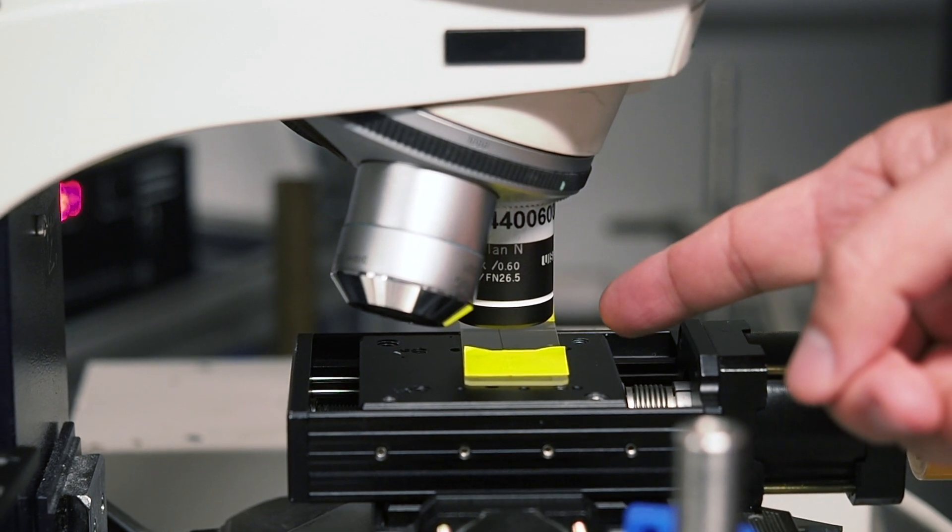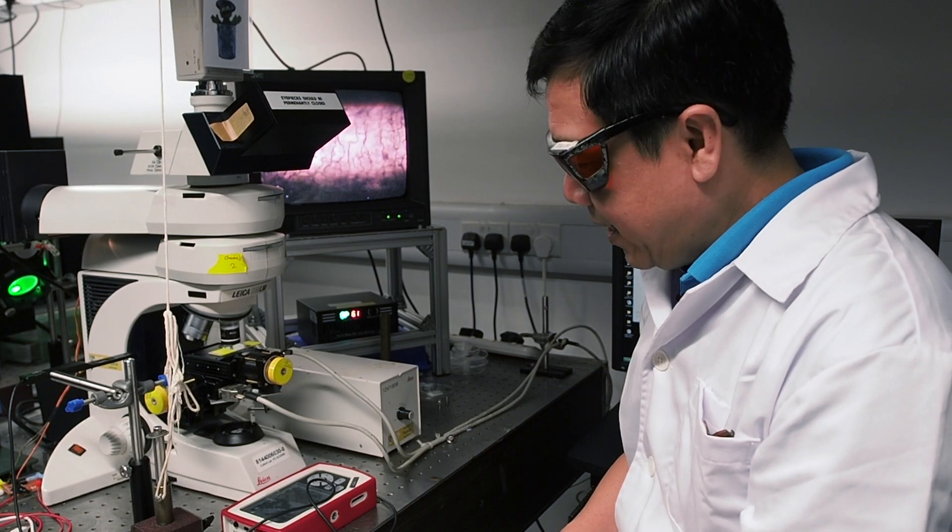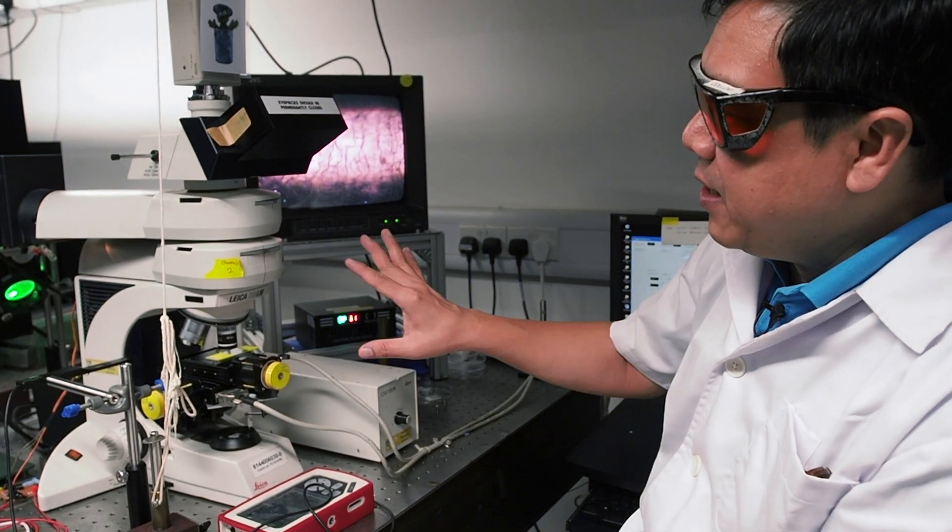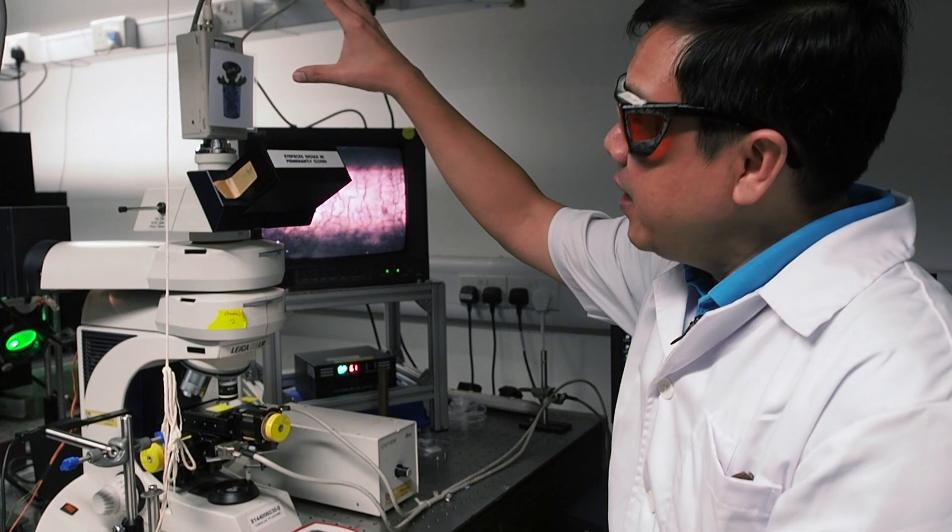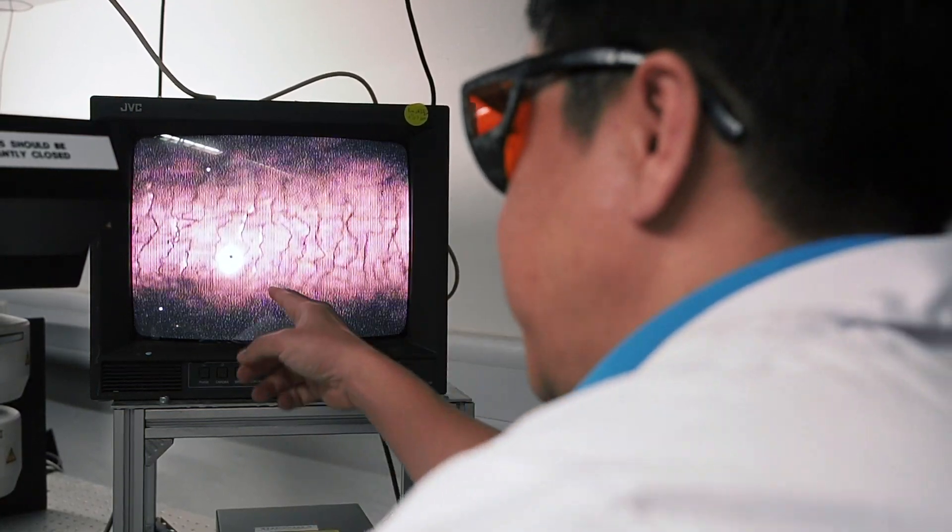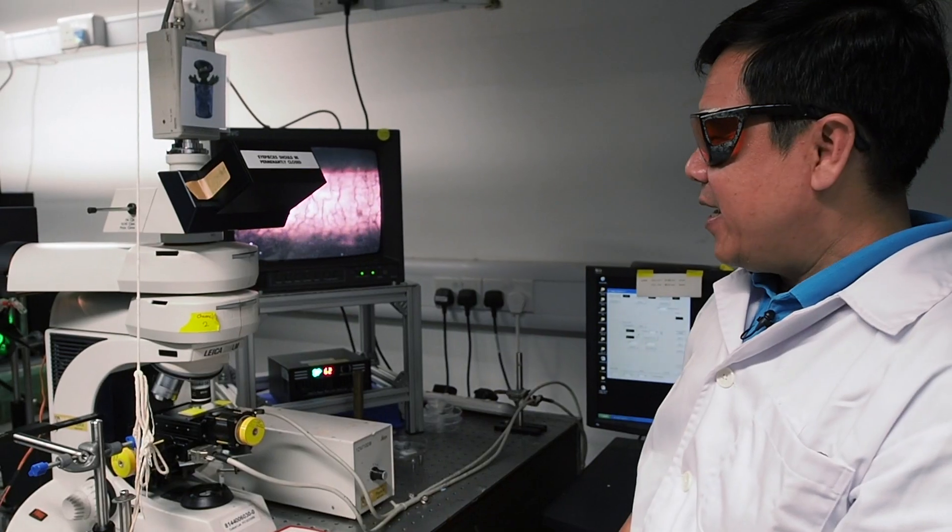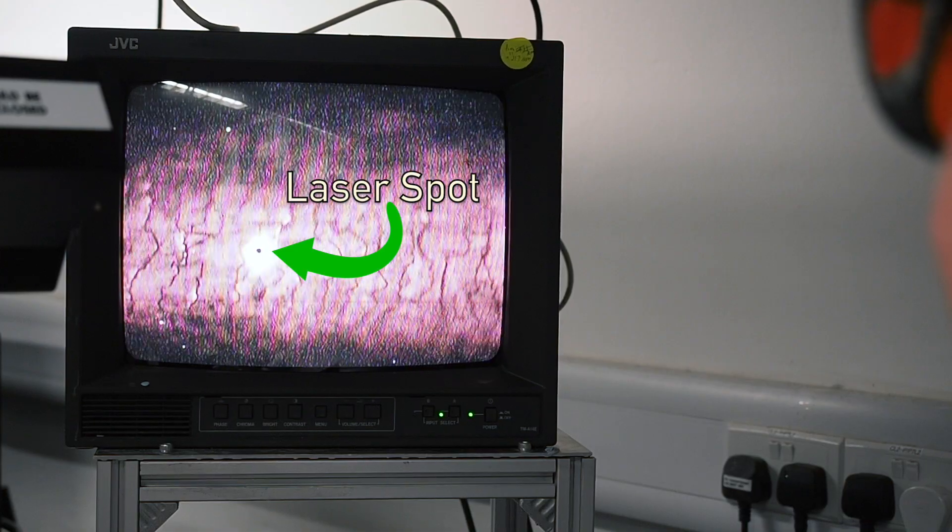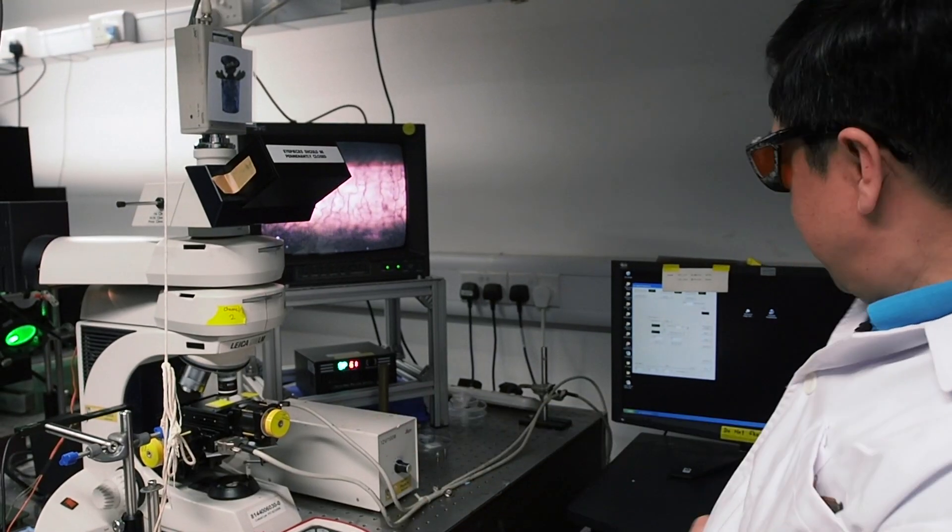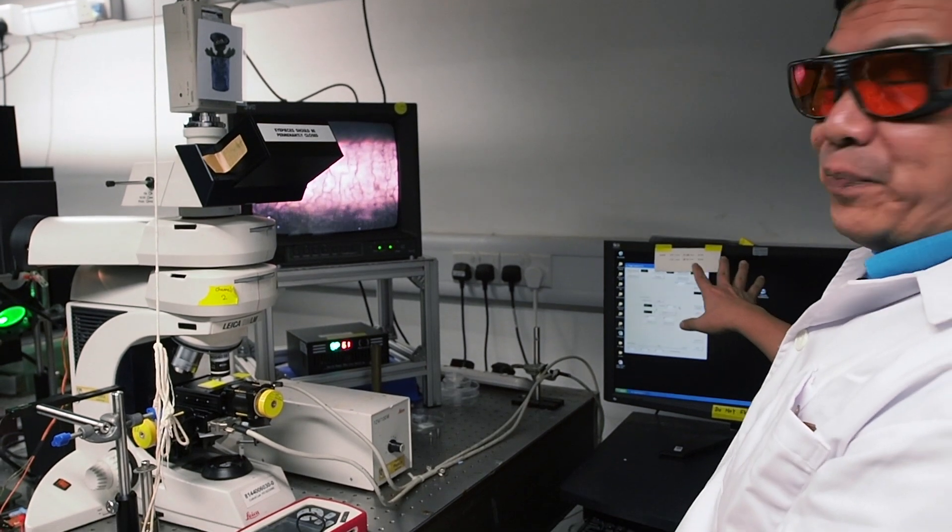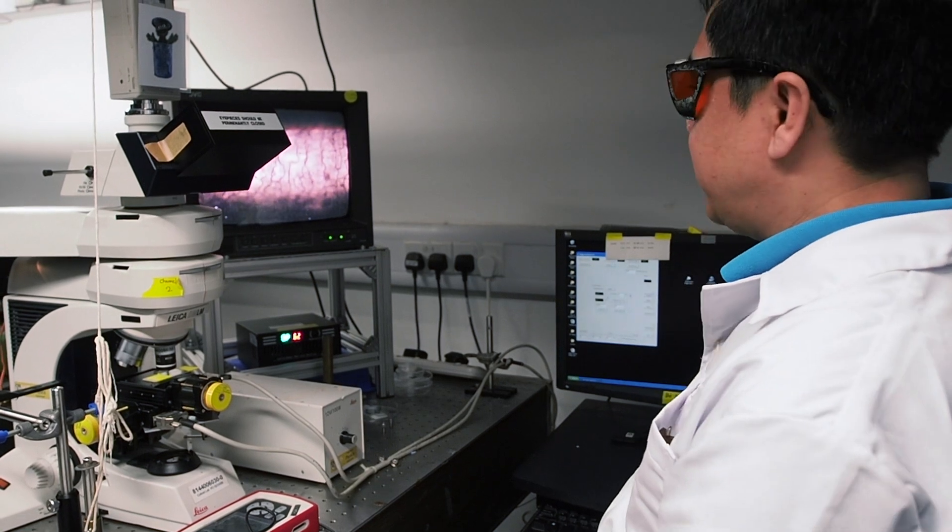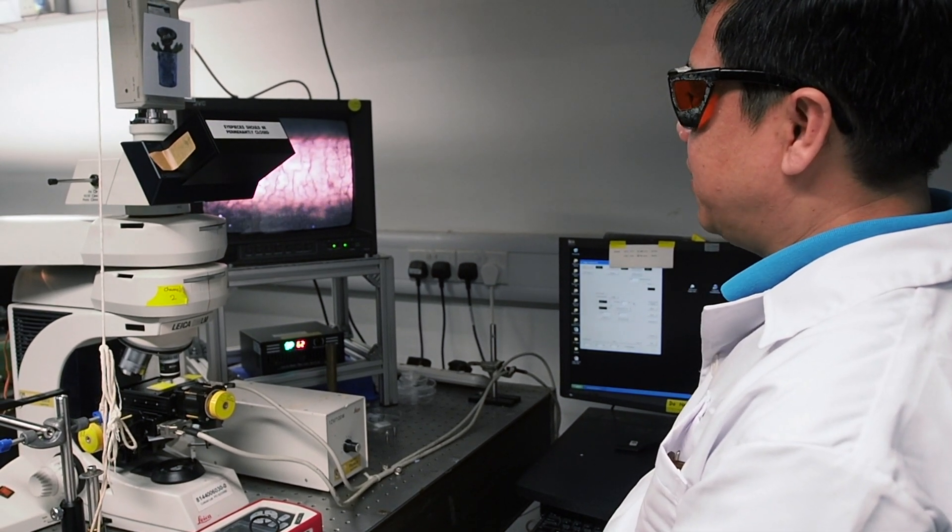We do not use the eyepiece to look at our samples. Typically we send the image to the camera, and the camera captures the pictures and displays them on the monitor. This is a single strand of your hair. You see the laser spot is illuminated over here. The computer control stage is controlled by this particular program.